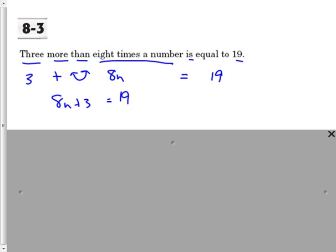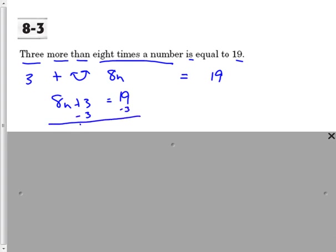For right now we weren't really expected to solve the equation, but we can go ahead and do that anyway. So minus 3 on both sides, we're going to get 8n equals 16. Divide by the 8 on both sides, so that way n equals 2, and that's your solution to this equation.